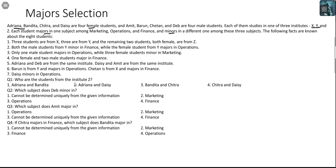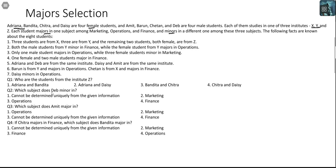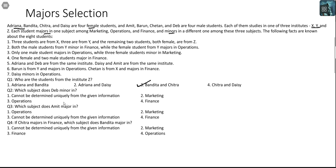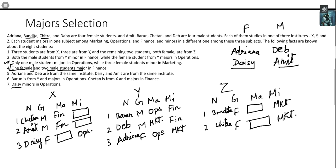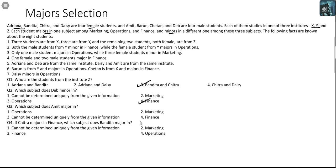Who are the students from Institute Z? Students from Institute Z are Bandita and Chitra — answer is Option 3. Which subject does Deb minor in? Deb minors in Finance — answer to question 2 is Option 4, Finance. Which subject does Amit major in? Amit is majoring in Finance — answer to question 3 is again Option 4, Finance.